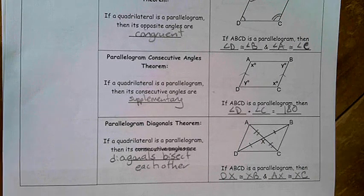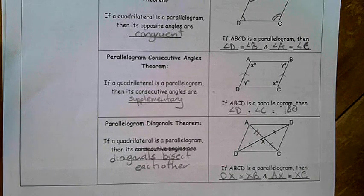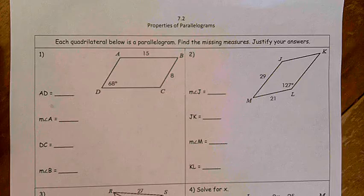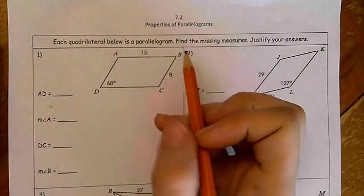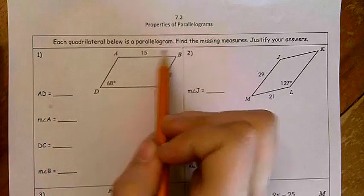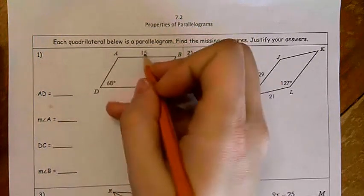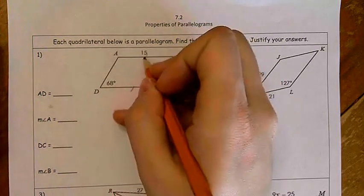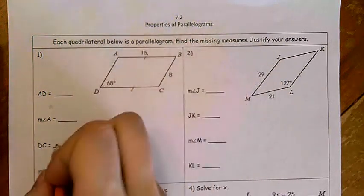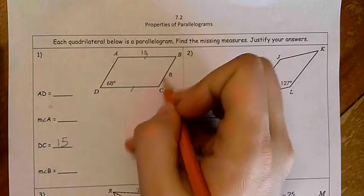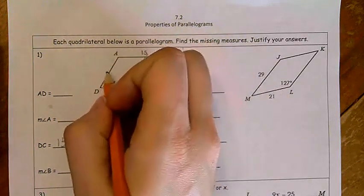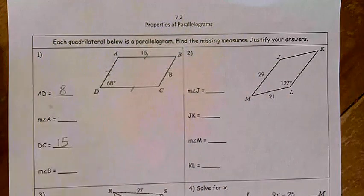So we've learned some theorems. Let's take a look at applying those. For question number one here, we have a parallelogram ABCD. We know that we have AB is 15. That means that we also know what DC is, because it's a parallelogram. So DC is 15 by the opposite sides theorem. We know BC is 8. That means that AD is also 8 by the opposite sides theorem.